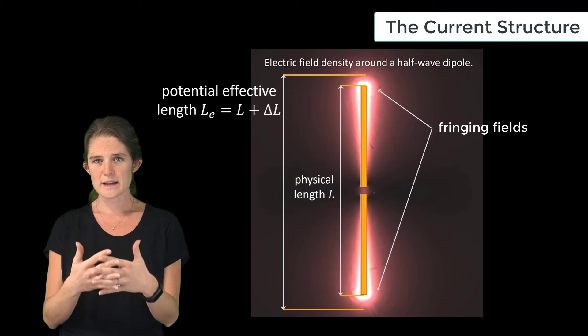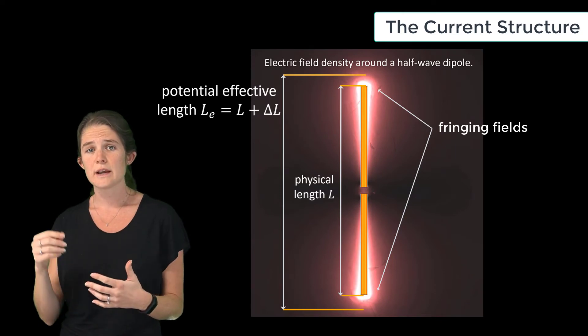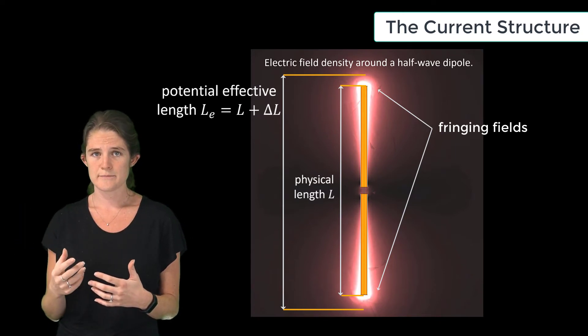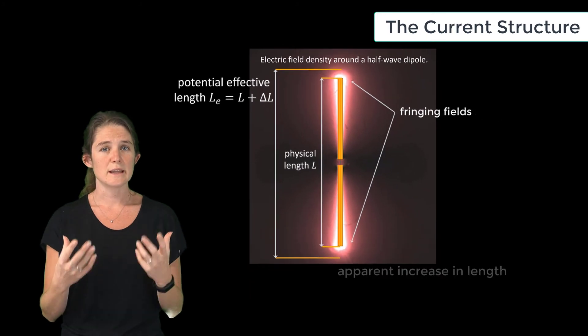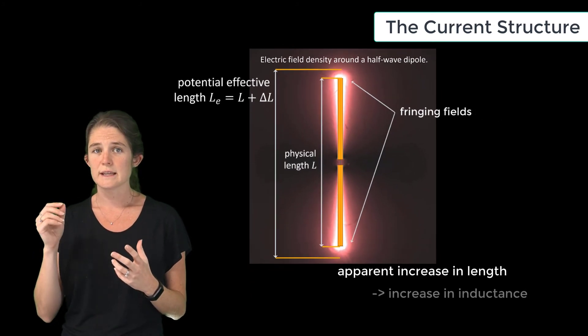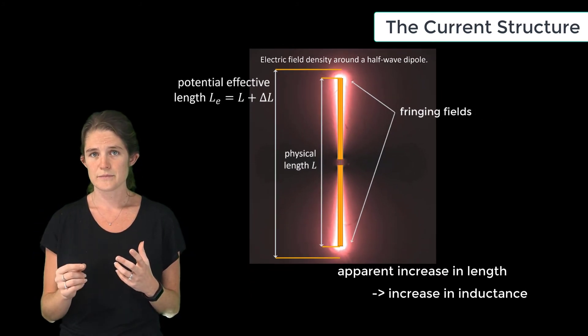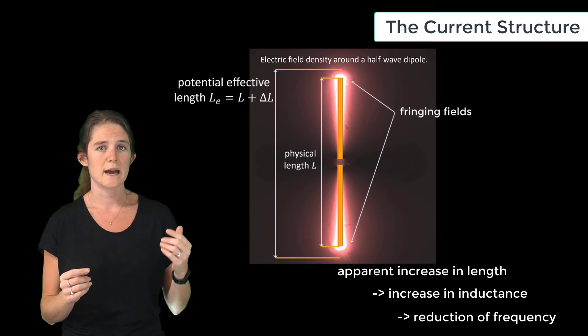So the effective length of the antenna is greater than the true length of the antenna. This apparent increase in length corresponds to an increase in the inductance of the antenna, and thereby to a reduction in the frequency at which the antenna resonates.